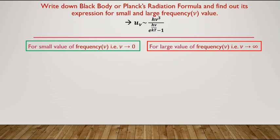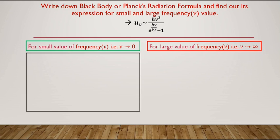For small values of ν, for ν tends to zero, the exponential term e^(hν/kT) equals 1 + hν/kT, neglecting higher order terms. Putting this in the denominator and simplifying, we are left with kT·ν². That's simple.